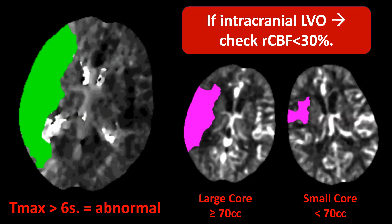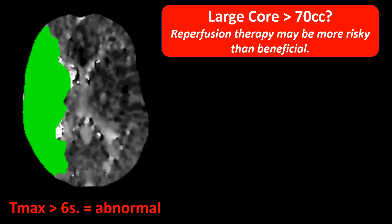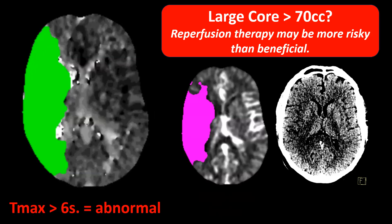We have to determine if it's a large core — at least 70 cc — or a small core — smaller than 70 cc. If a patient has a large core, reperfusion therapy will very likely not benefit the patient and can cause harm, as there is an increased risk of intracranial hemorrhage. With a small core, the patient is potentially a good candidate. However, you don't just look at core size on these maps — you must correlate with what you see on non-contrast enhanced CT.